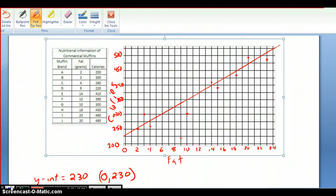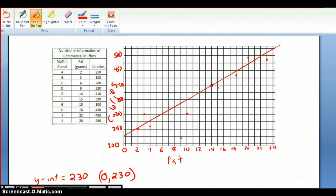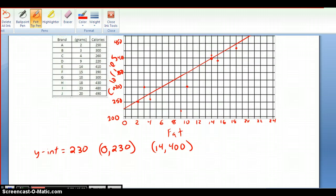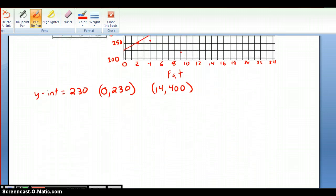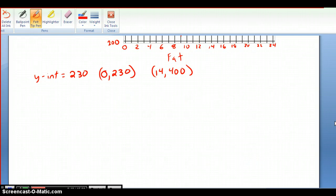So now to find one more point, basically look back on the graph and find an easy point that's nowhere near my y-intercept. And when I look up here, there's a point that crosses at the crosshairs here right at 14 grams of fat and at 400 calories. So I'm just going to write that point down here as my second point. So now I'm pretty much done with the graph of everything that I need for this problem.